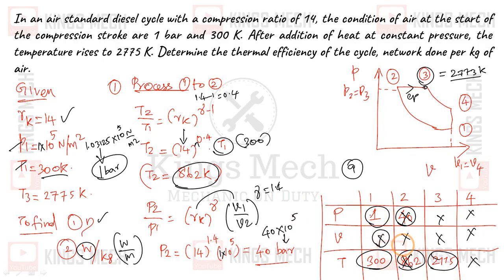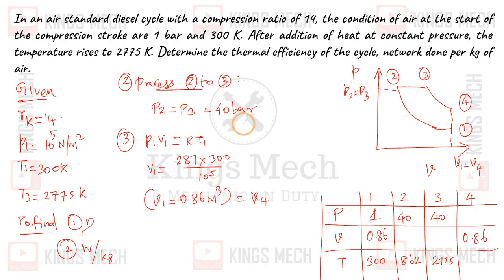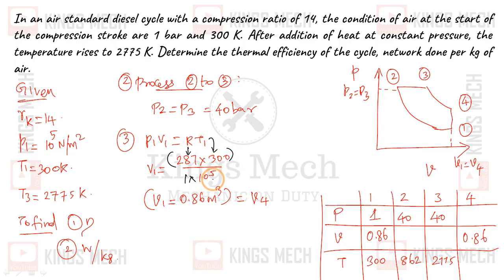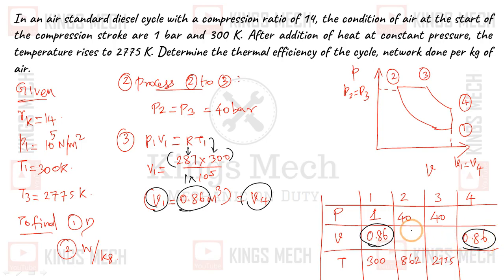Now let us find the values of V1 and V2. Using the ideal gas relation P1 V1 equals R T1, so V1 equals R T1 divided by P1. With R equal to 287 and T1 equal to 300 Kelvin divided by 10⁵, V1 equals approximately 0.86 m³/kg. V1 is equal to V4.